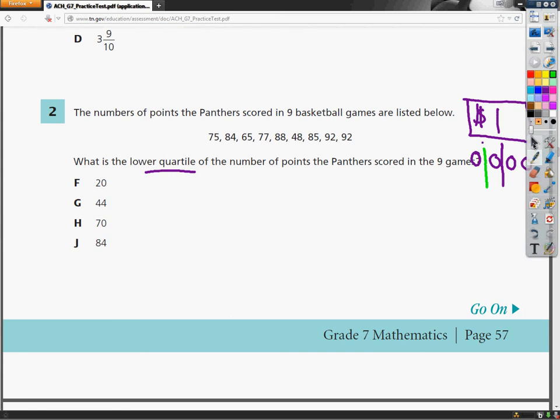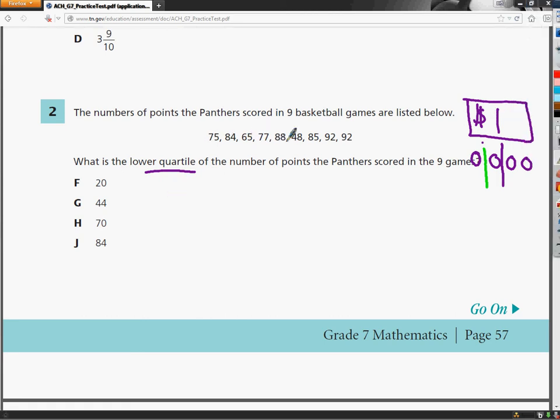So what we're going to do first to figure out this thing is to put the numbers in order. I need to put the smallest one first. All I'm doing by the way is looking at the first number, so the tens place. So here 48 would be first.